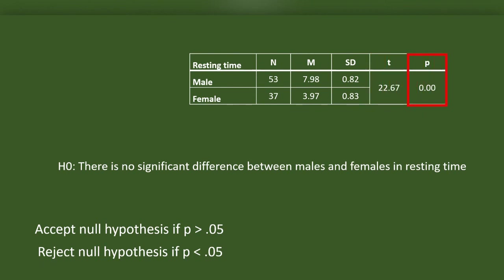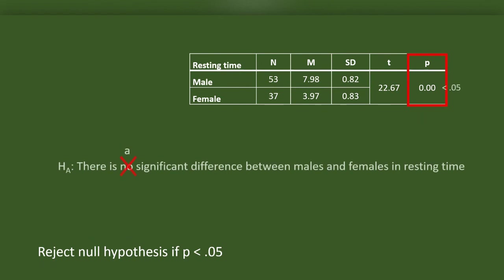This is p or probability of t. If p is less than 0.05, then the difference between males and females in resting time is significant. P is 0.00, which is definitely less than 0.05. So there is a difference. We have to reject the null hypothesis and accept the alternative. There is a significant difference between males and females in resting time.